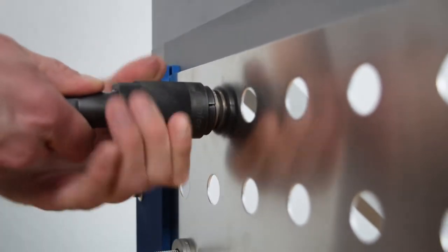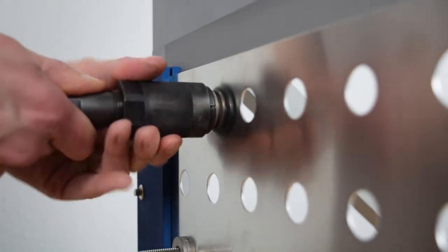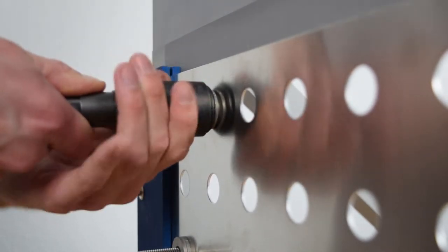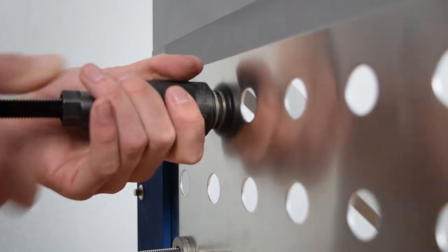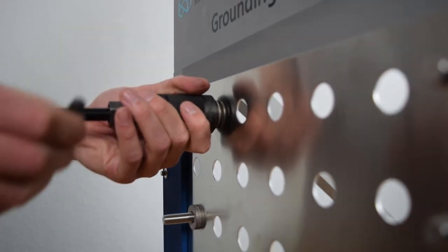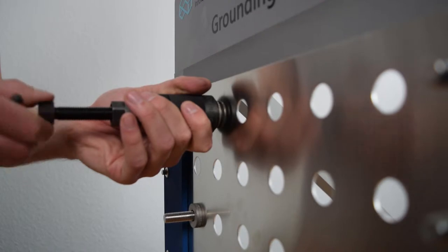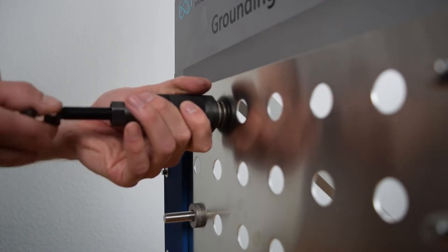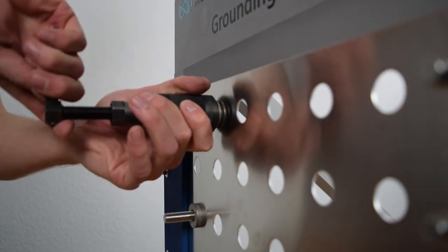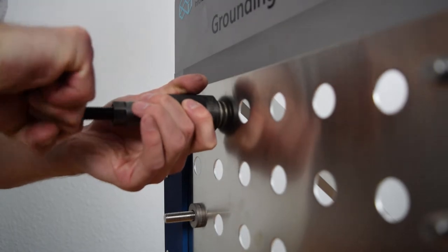Attach the tool so that its internal jaws grip into the groove of the contact ring. By turning the housing, the internal jaws clamp the contact ring. When turning the handle, the mandrel pushes out the threaded component.